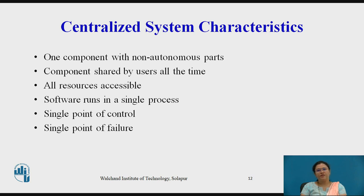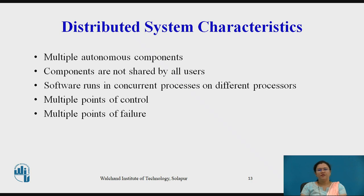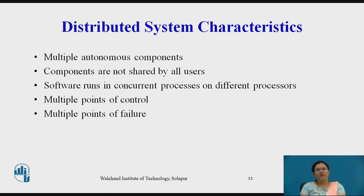We will see the characteristics of a centralized system. In a centralized system, there is one component with non-autonomous parts. Components may be shared by all users at all times. All resources are accessible. Software runs in a single process, with a single point of control and a single point of failure. Now, in a distributed system, multiple autonomous components come together to form the system. Components may not be shared by all users. Software runs in concurrent processes on different processors. It has multiple points of control and multiple points of failure.